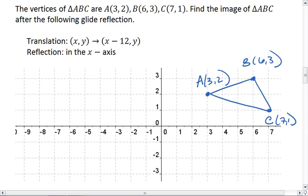We're then going to translate this first. We're going to the left by 12 units, and we're not going up or down. So we're going to take all of these and move them 12 units to the left.